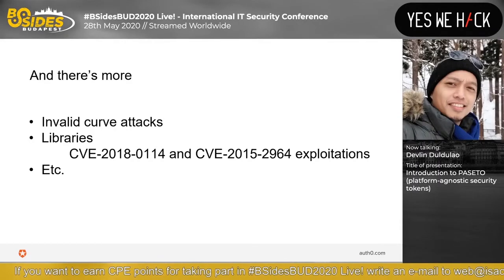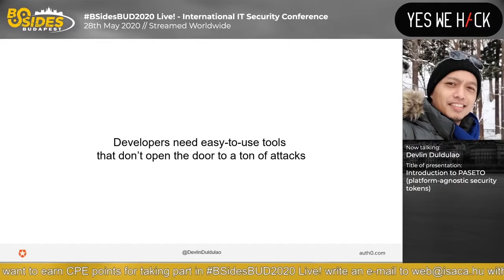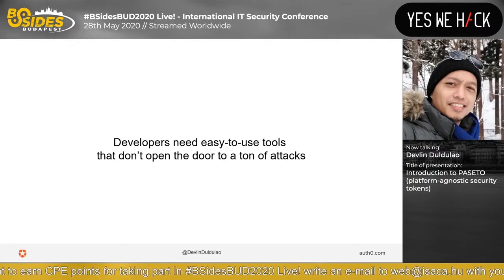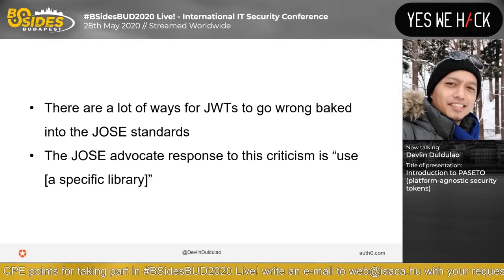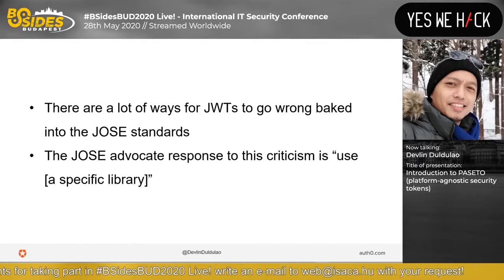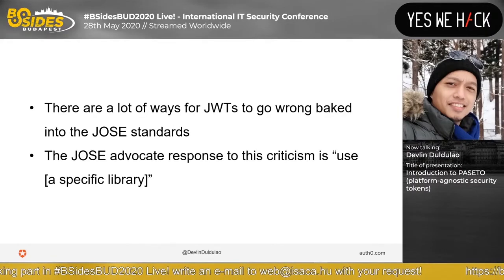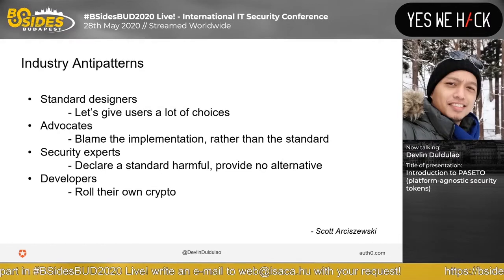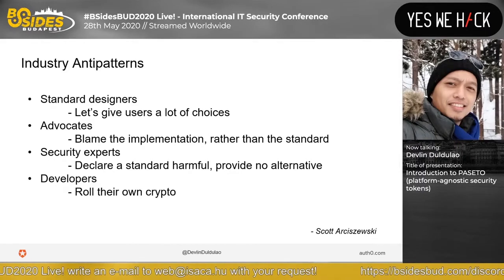As you can see, developers need easy-to-use tools that don't open the door to a ton of attacks. There are a lot of ways for JWTs to go wrong, going back to the JOSE standards. The JOSE advocate response to this criticism is: use a specific library. This shifts the blame onto the library developers and the library users. It has industry anti-patterns — standard designers give users a lot of choices, which is not good. Then advocates blame the implementation rather than the standard.